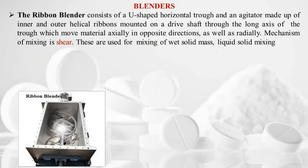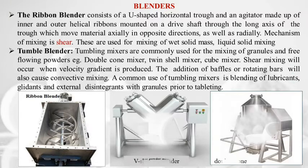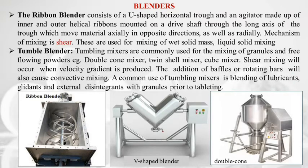The ribbon blender consists of a U-shaped horizontal trough and an agitator made of inner and outer helical ribbons mounted on a drive shaft along the long axis of the trough. It moves material axially in opposite directions as well as radially. The mechanism of mixing is shear, and ribbon blenders are used for mixing of wet solid mass and liquid-solid mixing.